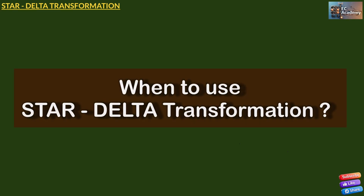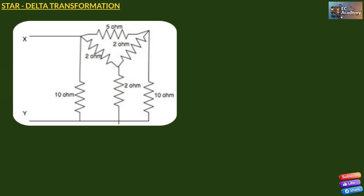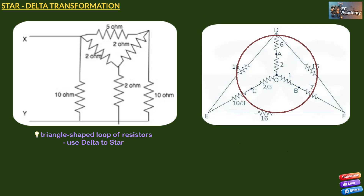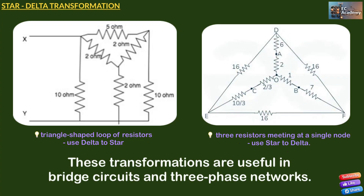When to use these star and delta transformations? If the circuit has a triangle-shaped loop of resistors and you need to simplify, use delta to star. If you see three resistors meeting at a single node but want to find equivalent resistance between two external points, use star to delta conversion. These transformations are very useful in bridge circuits and three-phase networks.